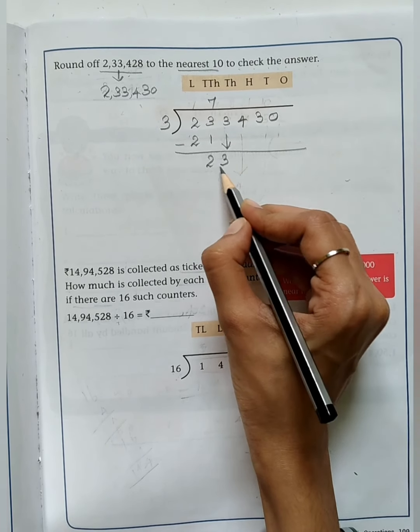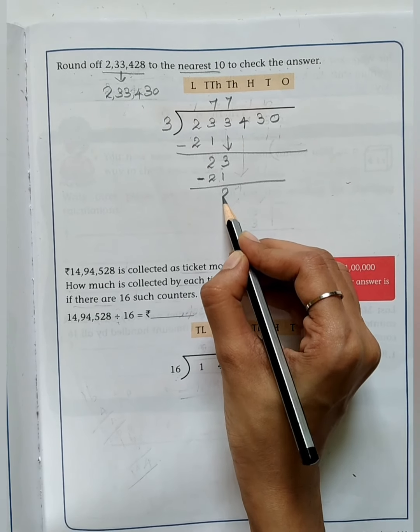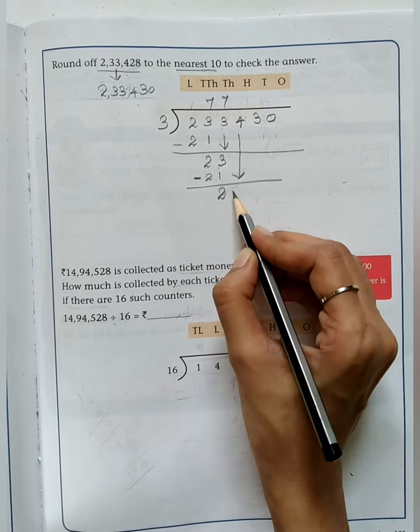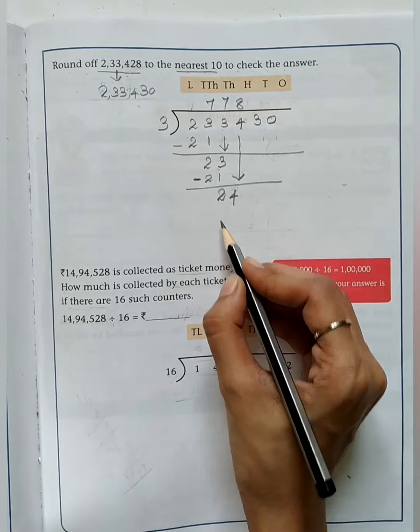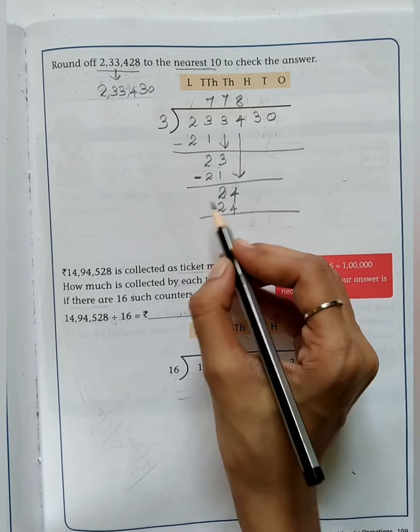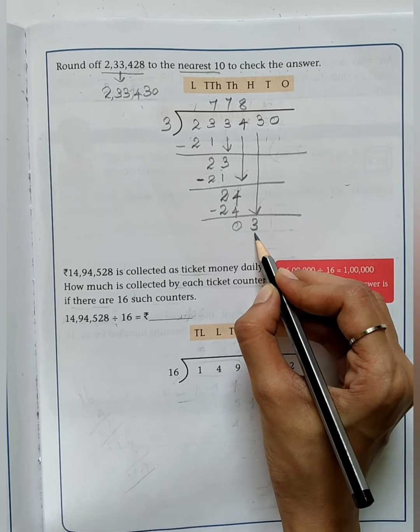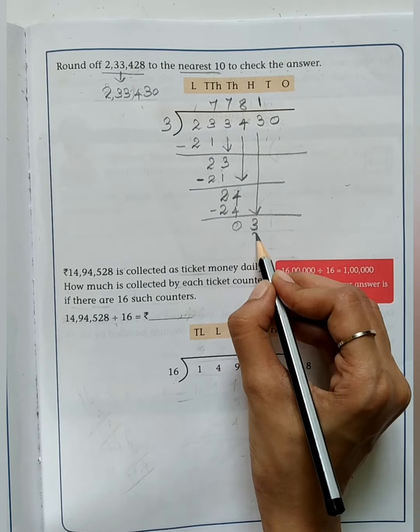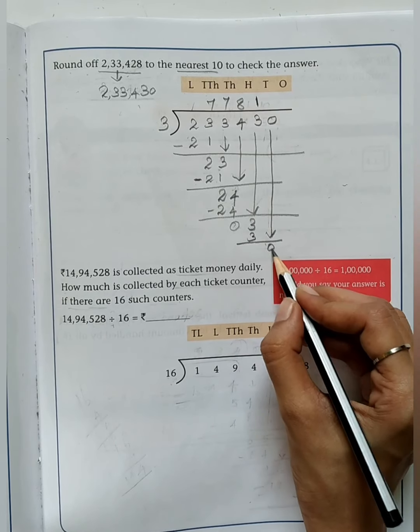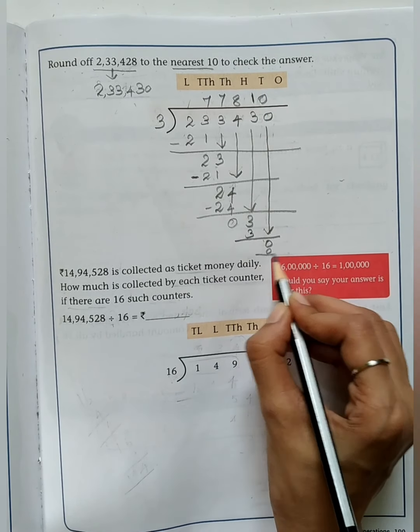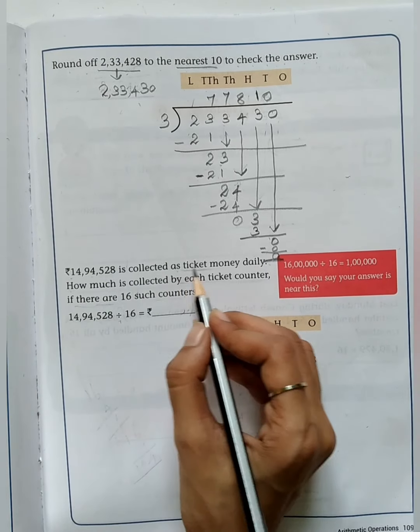Then bring down 3. Then again 7 3's are 21. 23 minus 21, we got the answer is 2. Then you have to bring down the next digit 4. 8 3's are 24. After writing, we have to do the subtraction. It will be 0. Then bring down the next digit 3. 1 times 3, so I just put 1 in the 10's place. Then 3 minus 3, 0. Bring down the next digit 0. 0 is less than 3, so we have to put 0 in the quotient place. So this is the answer, 77,810.